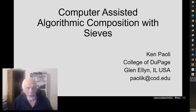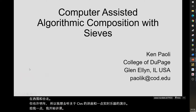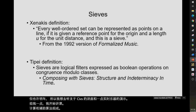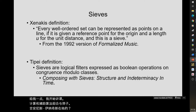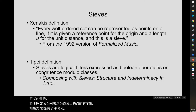I'd like to get going with the lecture on SIVs and a little bit of a demonstration of a real-time instrument. Computer Assisted Algorithmic Composition with SIVs. Giannis Xenakis, in his 1992 version of Formalized Music, defined the SIV as a well-ordered set that can be represented as points on a line if it is given a reference point for the origin and a length U for the unit distance.